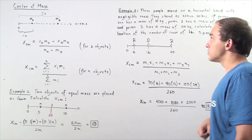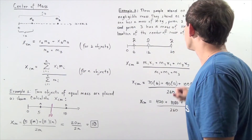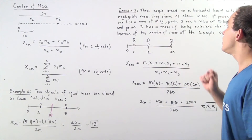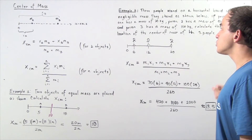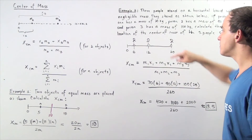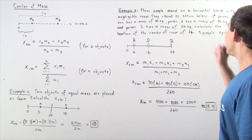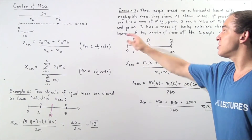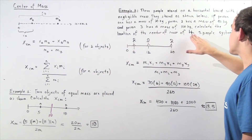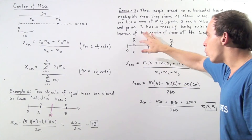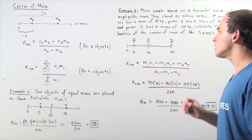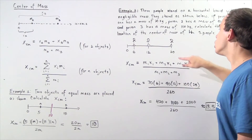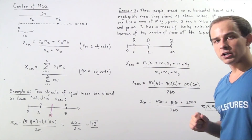In example two, we use the general formula. Three people stand on a horizontal board with negligible mass. Person one has a mass of 70 kilograms, person two has a mass of 90 kilograms, and person three has a mass of 100 kilograms. Person one is 6 units from the zero mark, person two is 12 units, and person three is 20 units from the zero mark.